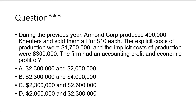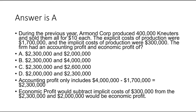Armand Corp. produced 400,000 canuters and sold them all for $10 each — $4,000,000 of revenue. Explicit costs of production were $1,700,000 and implicit costs were $300,000. Accounting profit is revenue minus explicit costs: $4,000,000 − $1,700,000 = $2,300,000. Economic profit subtracts all implicit costs from accounting profit: $2,300,000 − $300,000 = $2,000,000. The answer is A. Notice economic profit is always lower than accounting profit.